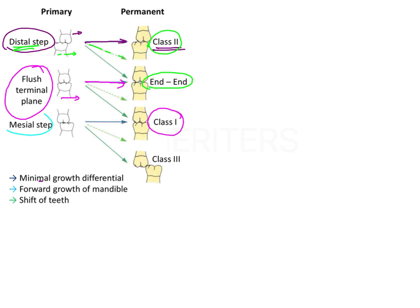For a mesial step, where the mandibular molar is ahead of the maxillary molar, in the permanent dentition this results in a Class 1 relationship with the mesiobuccal cusp fitting into the buccal groove. However, if there is further mesial movement of the mandibular molar, this results in a Class 3 molar relationship. In summary: distal step → Class 2 or end-on; flush terminal → end-on or Class 1; mesial step → Class 1 or Class 3.